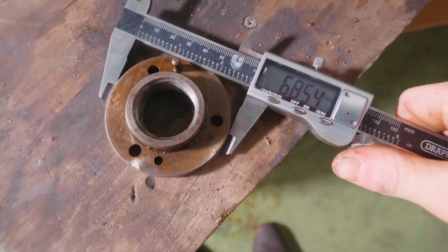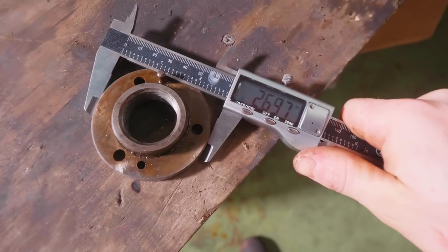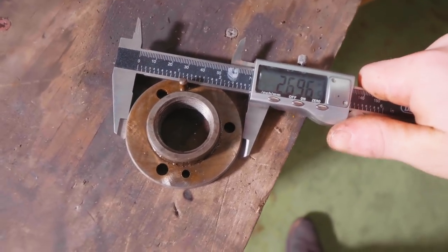So we're going to need some steel and we're going to take some measurements. This is going to be a really fun project here in the Colchester lathe. Let's have a look-see. 68.54. A few thou under 2.7 inches. Just got to find some steel that's bigger than that.